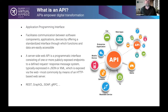To set the scene, we'll first cover what an API is, then dive into understanding risk in the context of API security. An API — an Application Programming Interface — facilitates communication between software components, applications, and devices by offering a standardized interface through which functions and data are easily accessible. For example, every mobile app on your phone is accessing APIs in the background to obtain information and deliver functionality.